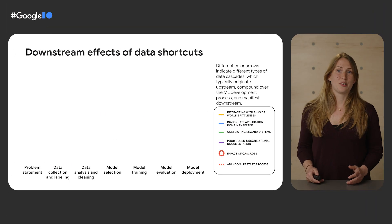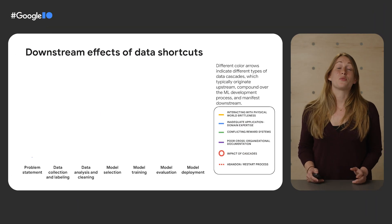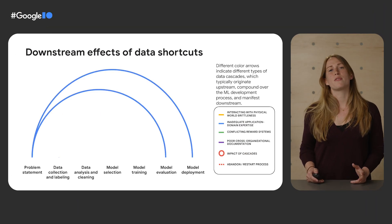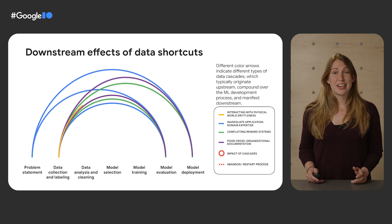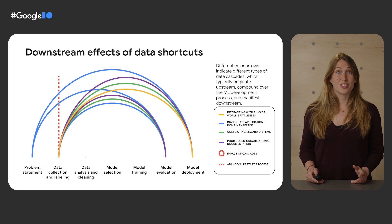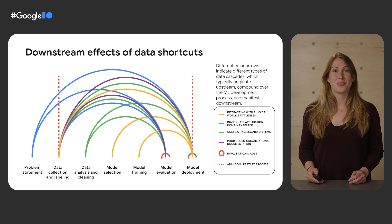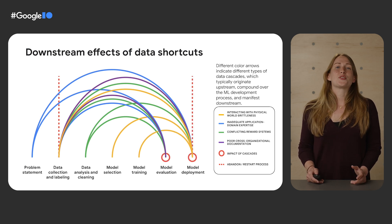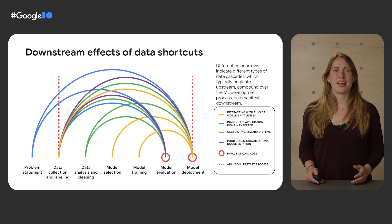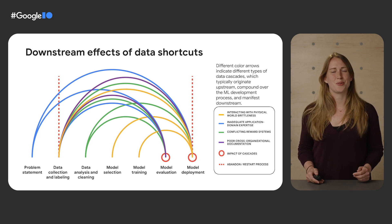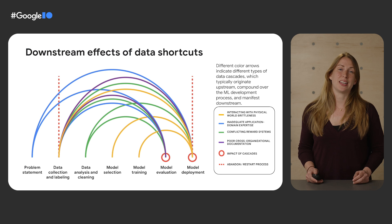One of the lessons that we learn over and over again is that data quality and representation largely determine the success of our digital products and AI systems. This is true as measured by metrics as diverse as performance, fairness, robustness, safety, and even scalability.